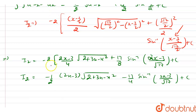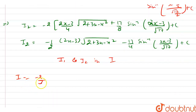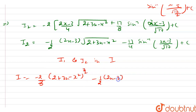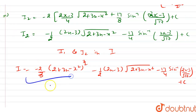On substituting the values of I1 and I2 into I, the final answer is: I equals minus 2/3 times (2 plus 3x minus x square) raised to power 3/2 minus 1/2 times (2x minus 3) times under root of (2 plus 3x minus x square) minus 17/4 times sin inverse of (2x minus 3) divided by under root of 17 plus c. This is our final answer.